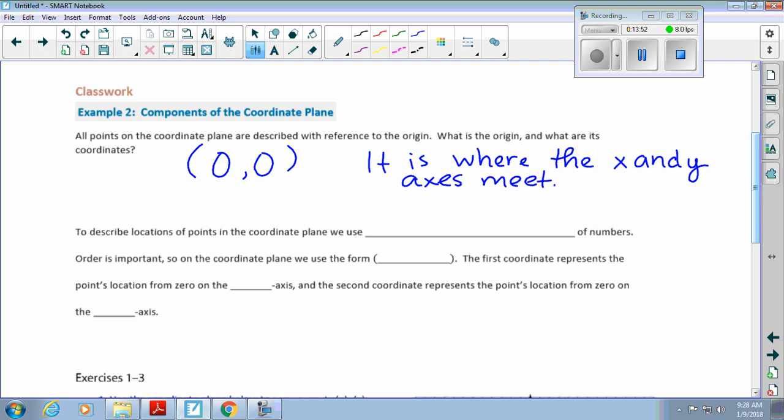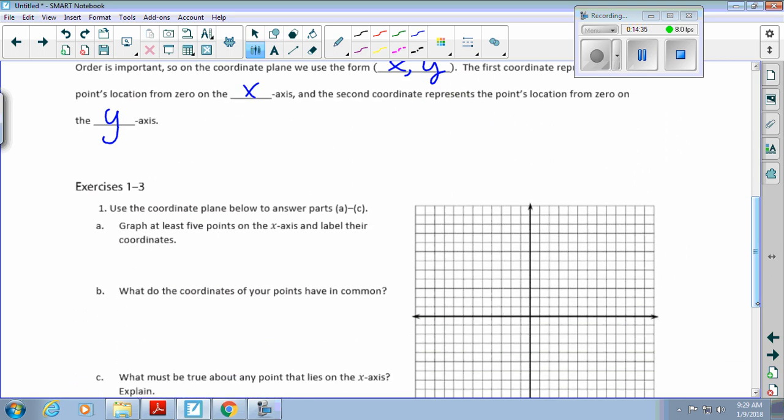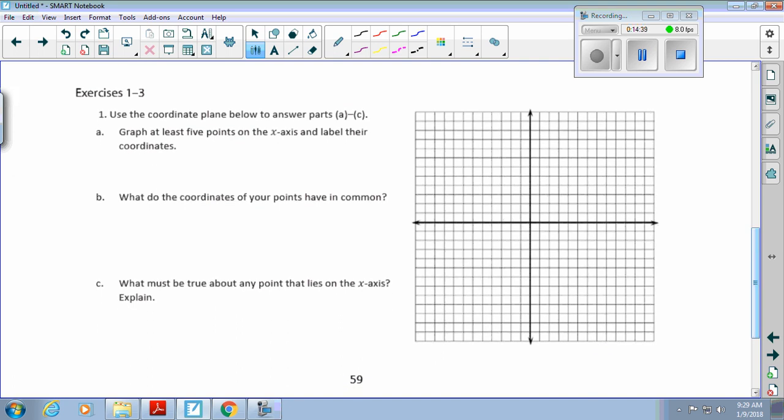To describe locations of points in the coordinate plane, we use ordered pairs of numbers. Order is important. On the coordinate plane, we must use the form X, comma, Y. The first coordinate represents the point's location from zero on the x-axis, and the second coordinate represents the point's location from zero on the y-axis.